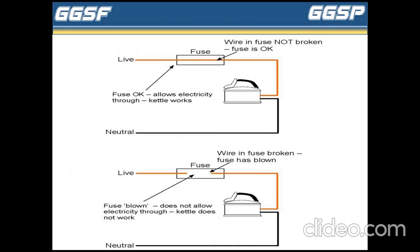Here is an example. In case one, the fuse allows electricity to pass through it and the kettle works. That means the current entering the fuse is less than the fuse rating. In case two, the fuse has blown. It does not allow electricity to pass through it and the kettle does not work. That means the current entering the fuse is more than the fuse rating, so the fuse element breaks and supply is not passed further to the appliance.